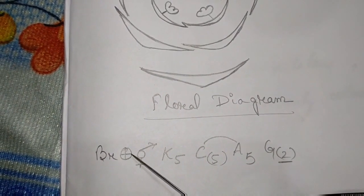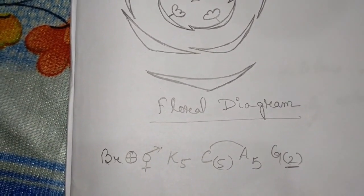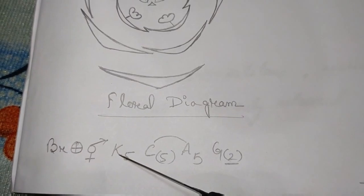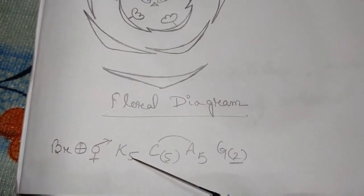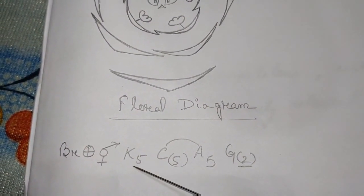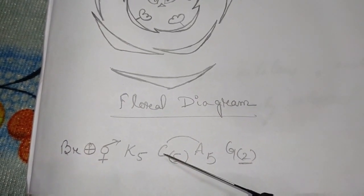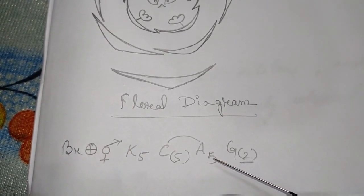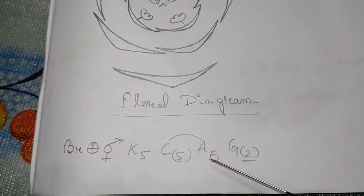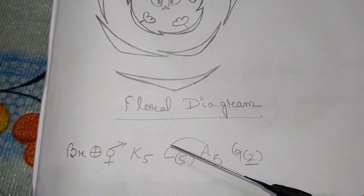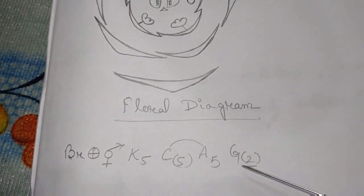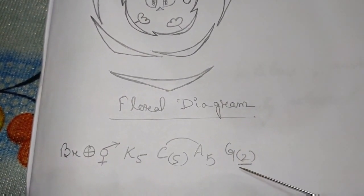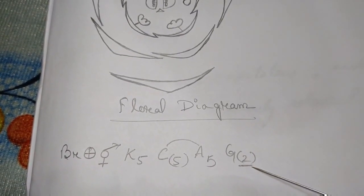Br stands for bract. The plus sign stands for actinomorphic. The bisexual sign stands for bisexual flower. K for calyx — there are five sepals which are free, so K5 is written freely, not in brackets. C for corolla — five petals but fused, so C(5) is in brackets. A for androecium — five stamens present and united with the corolla, so an underline is given above A5. G for gynoecium — two carpels which are fused, so G(2) in brackets; since the ovary is superior, it is underlined below.